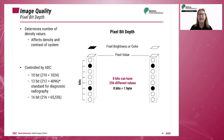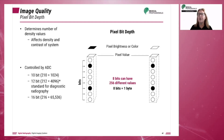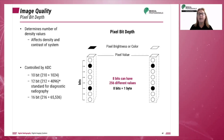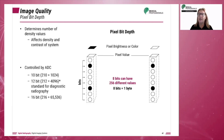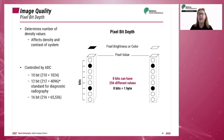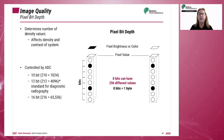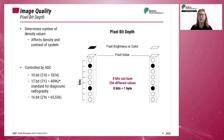Each pixel has a bit depth, or number of bits that determine the number of shades of gray each pixel is capable of recording. Pixel bit depth determines the accuracy of the digitized analog signal and the pixel brightness or gray level. Bit depth is determined by the analog to digital converter. Higher bit depth allows for a greater number of shades of gray to be displayed on the monitor and has better contrast resolution.